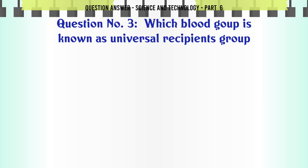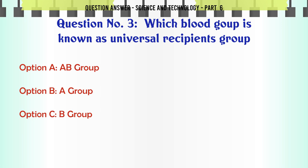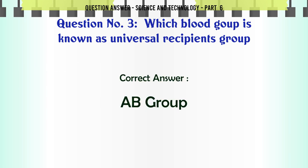Which blood group is known as universal recipients group? A. AB Group. B. A Group. C. B Group. D. O Group. The correct answer is AB Group.